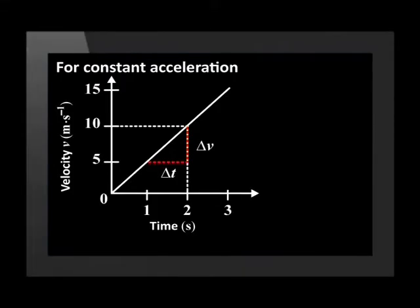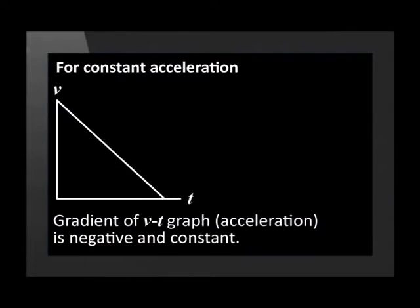Since the velocity changes at a constant rate, the velocity-time graph is a straight line. If the velocity increases, the velocity-time graph is a straight line with a positive gradient. And if the velocity decreases at a constant rate, the velocity-time graph is a straight line with a negative gradient.